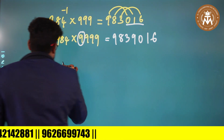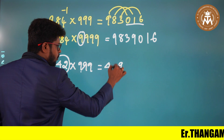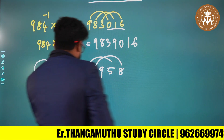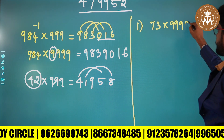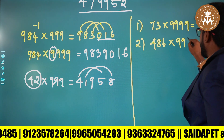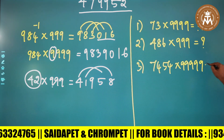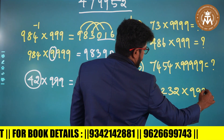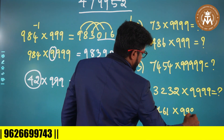We will explain: 42 into 9 — 42, 1 is 41, 4 is 5, 1 is 8 — this is the logic. So if you multiply, you will understand. 73 into 49 — answer: second one. 486 into 999 — question number 3. 74, 54 into 99999 — 59. Question number 5: 32 into 49. Question number 5: 461 into 99999 and 49.